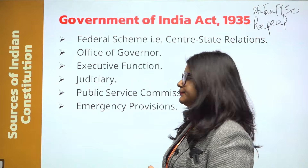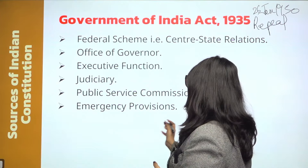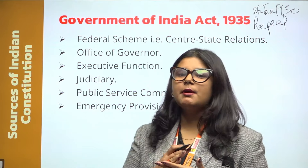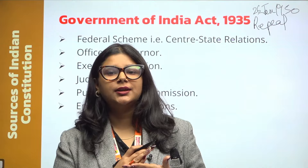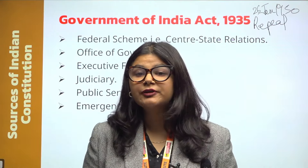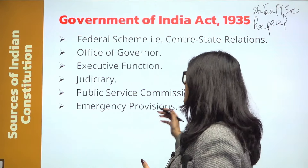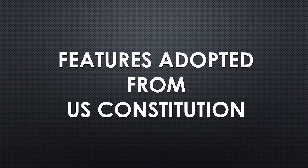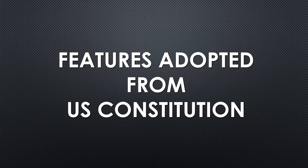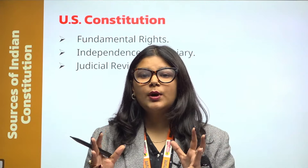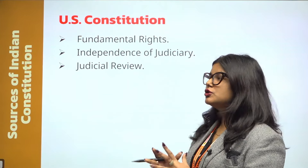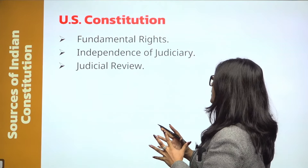Next is the Public Service Commission. We have the Union list, the State list, and the Concurrent list — three types of lists. The concept of these lists is also adopted from the Government of India Act.